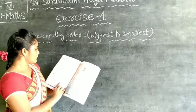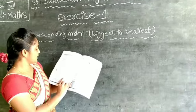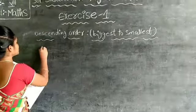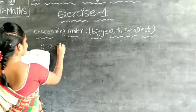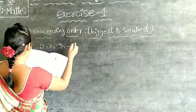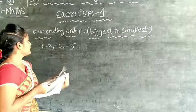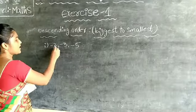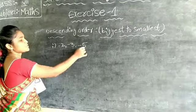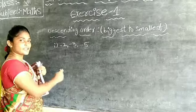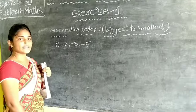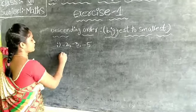Write the following integers in descending order. The first one should be minus 2, minus 3, minus 5. Now, the given integers are negative integers. If you find out ascending order and descending order.